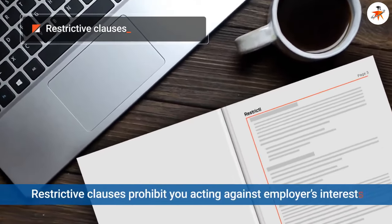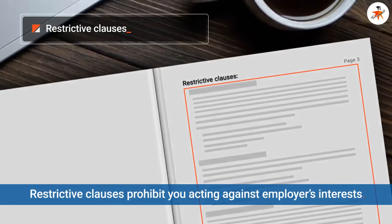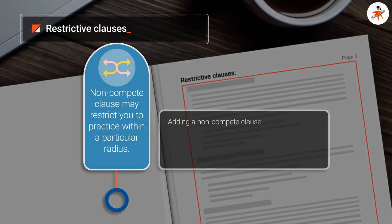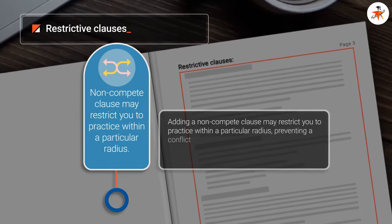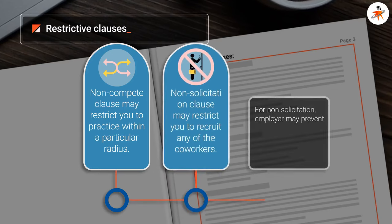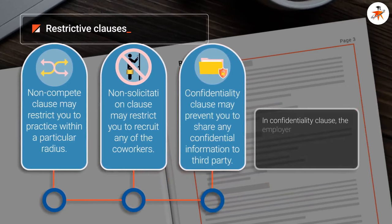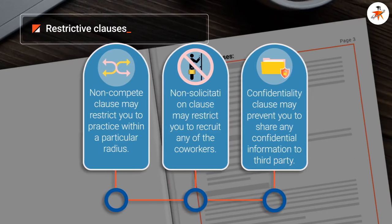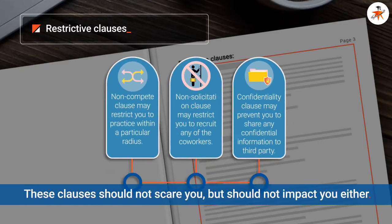Your employer may include restrictive clauses in your contract to prohibit you from acting in a manner that could harm the employer's interests. A non-compete clause may restrict you to practising within a particular radius, preventing a conflict of interest — and kindly understand that the radius in downtown Dubai and in rural areas can make a lot of difference. A non-solicitation clause may prevent you from recruiting co-workers after you have left the employer. A confidentiality clause may prevent you from divulging important health facility information to unauthorised third parties. Finding such restrictive clauses shouldn't necessarily scare you — it is simply beneficial to be aware of your rights and obligations before becoming legally bound — but you must ensure that such restrictions do not negatively impact you during the job and in future.